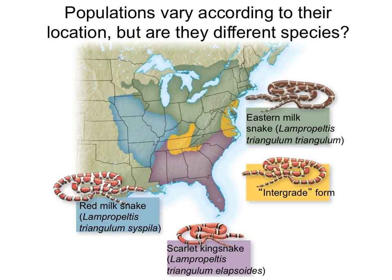So if we're going to study whether populations become a separate species, the first question we need to ask is: what makes a population a different species, and not just a new population of the same species? We have this case study from kingsnakes from the United States — you can see they occupy different regions within the country and they also look different. But can we consider them different species, or are they simply variations of the same species?